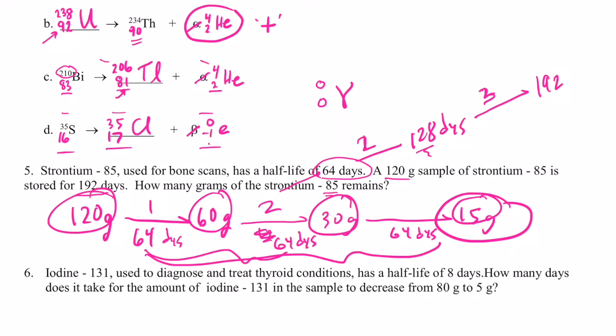Let's do the last one here and try to do better for you. Iodine-131. It's used to diagnose and treat thyroid conditions. Its half-life is eight days. How many days does it take for the amount of iodine-131 to decrease from 80 grams to five grams? So let's see how many half-lives it would go through. So 80 grams to 40 grams, that would take eight days, wouldn't it? Right? Because my half-life is eight days. And then 40 grams to 20 grams would be eight more days. Right? Another half-life. So 16 days so far.